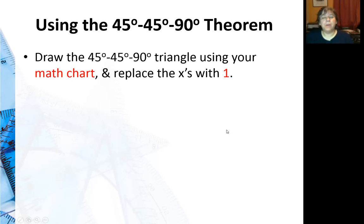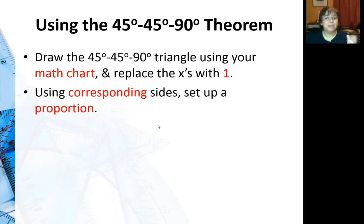First of all, draw the 45-45-90 triangle using your math chart and replace the x's with 1. Just like in similar triangles, remember how I told you, draw two separate triangles that way you can set up your proportion. You're going to want to draw the 45-45-90 and you'll get really fast at it because it's always the same one.